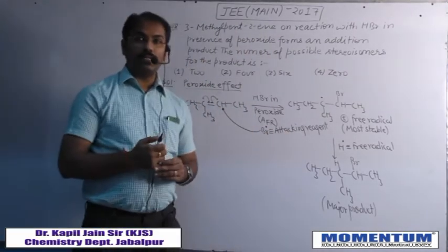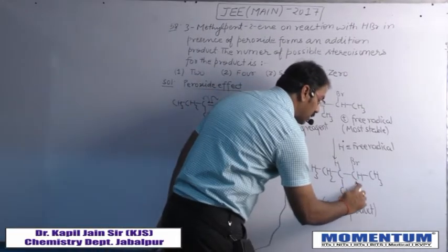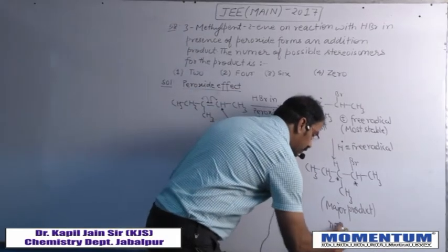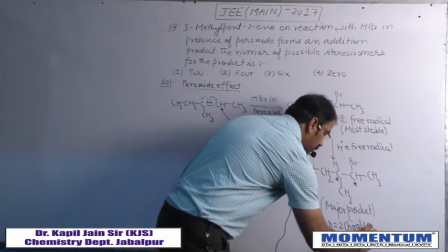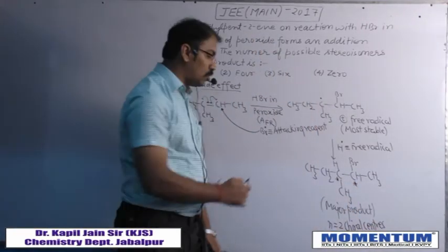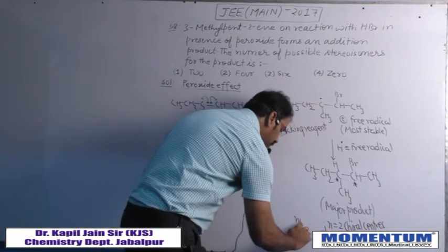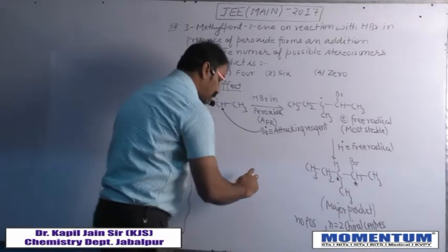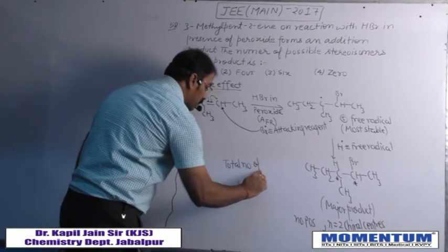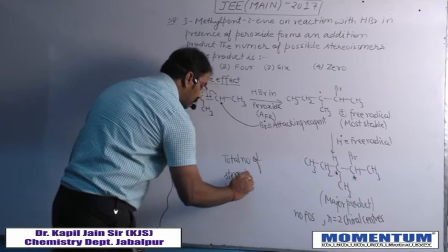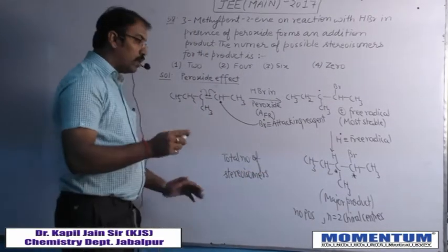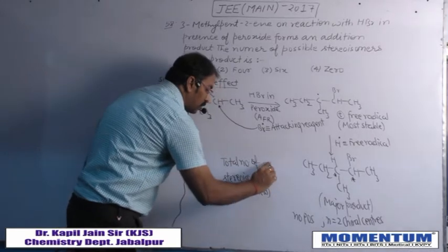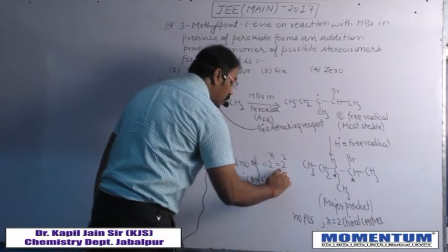First, we have to observe whether there is any chiral center. There are two chiral centers here. Next, we check for any plane of symmetry — there is no plane of symmetry. So total number of stereoisomers, which are optical isomers (no geometric isomers possible), is 2^n = 2^2 = 4.